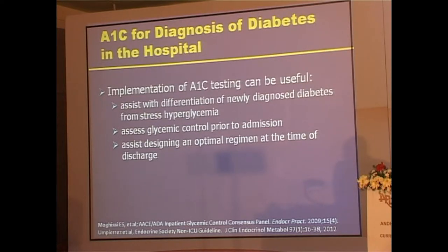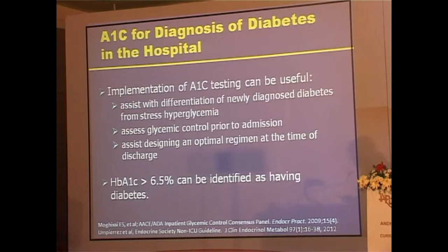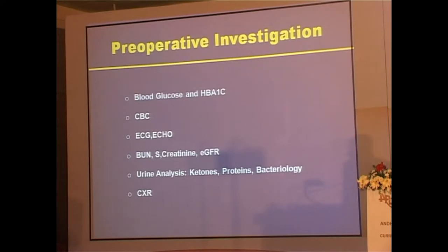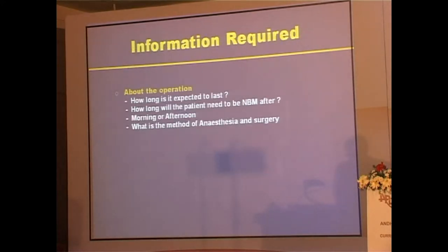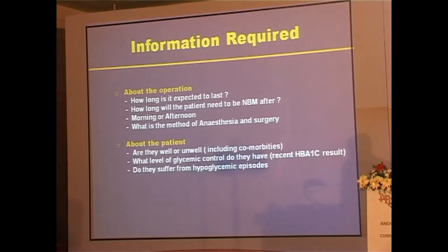Assess glycemic control prior to admission — know the A1C — to design the right regimen. If somebody has an A1C of 12 walking into hospital, at discharge they probably need insulin therapy and education. Remember: A1C above 6.5 indicates diabetes. Whenever a patient walks into hospital for surgery, you must know about the operation: how long will it last, will the patient be nil by mouth, is it a morning or afternoon procedure, and what is the method of anesthesia?